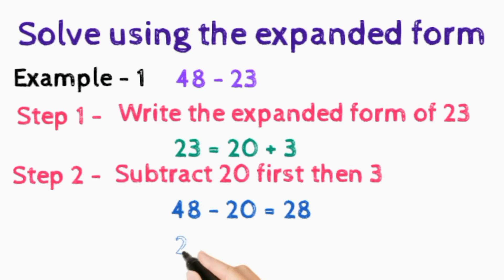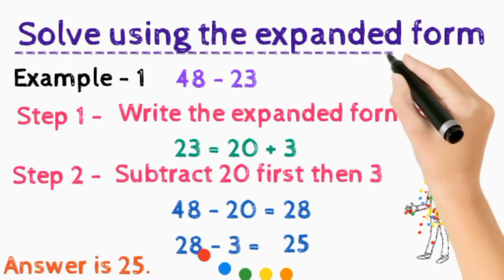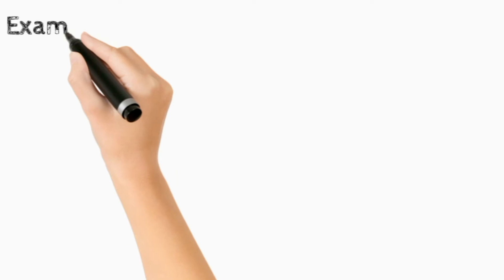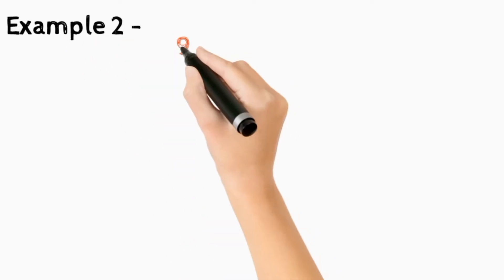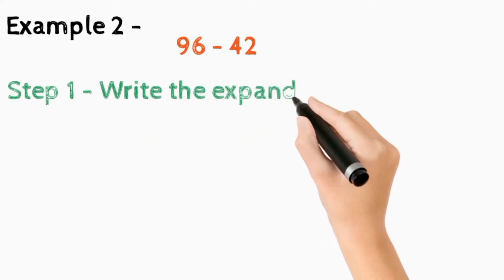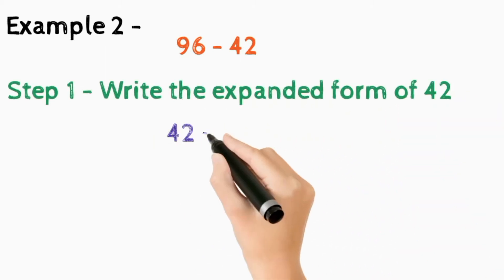So 28 minus 3 is equal to 25. We have to write 25, so the answer is 25. Now we have to look at another example, that is example number 2. Here 96 minus 42. In step 1, firstly we write the expanded form of 42.